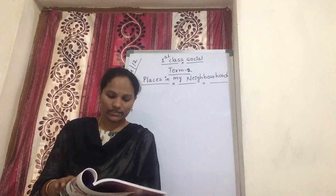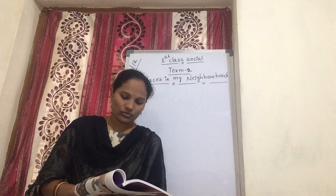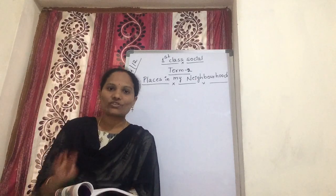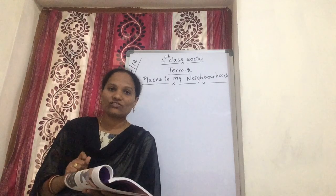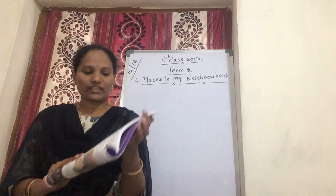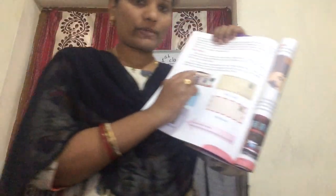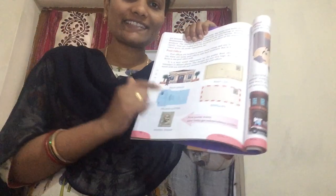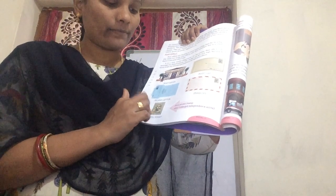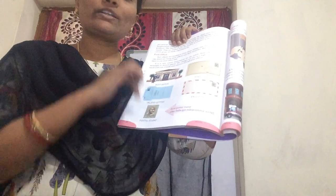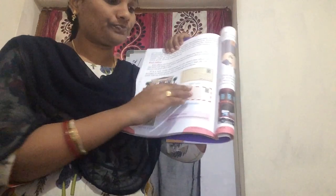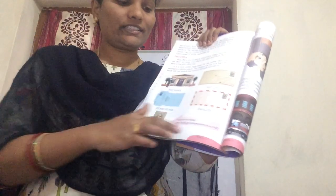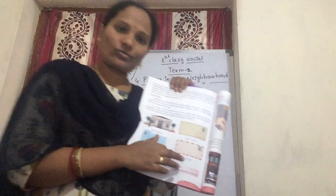For example, here you can see some pictures. The first postal stamp was issued after India got independence in 1947. Here are some letters — this is called a post office letter. This is an inland letter. This is called a postal stamp — letters must have a postal stamp. Next is the post code. These are the different types of postcards.